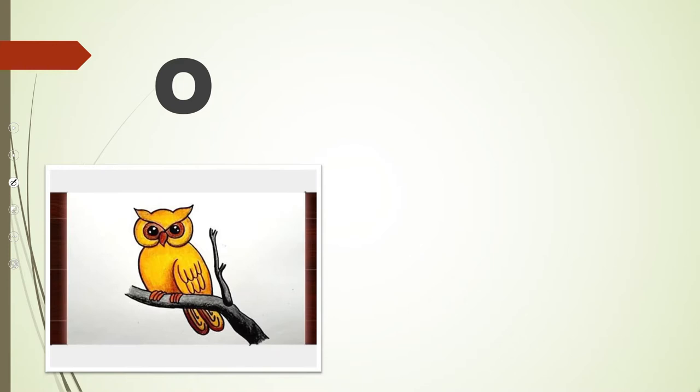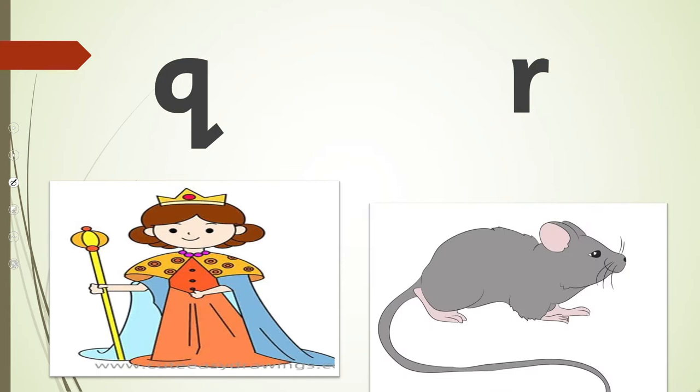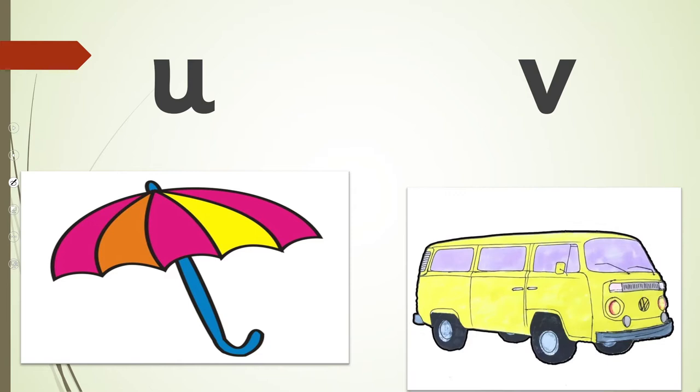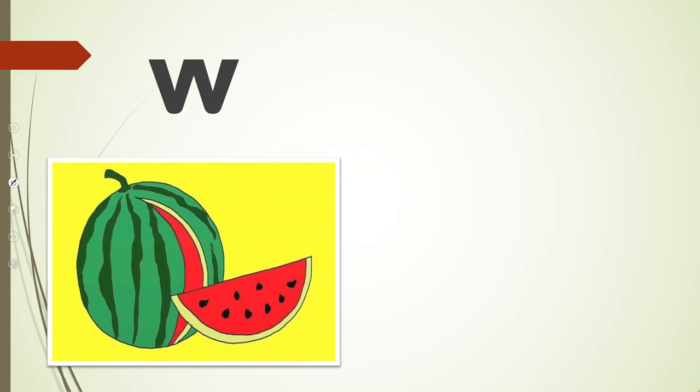G, grapes. H, hat. I, ice cream. J, joker. K, kite. L, lamp. M, mango. N, nest. O, owl. P, panda. Q, queen. R, rat. S, sun. T, tree. U, umbrella.